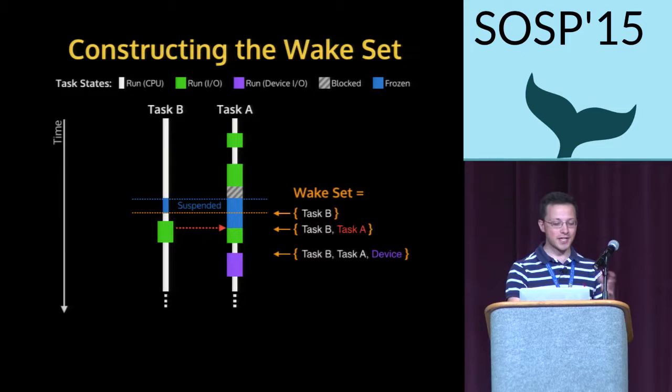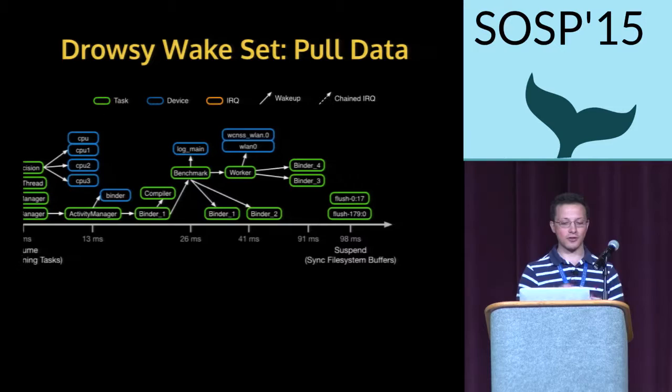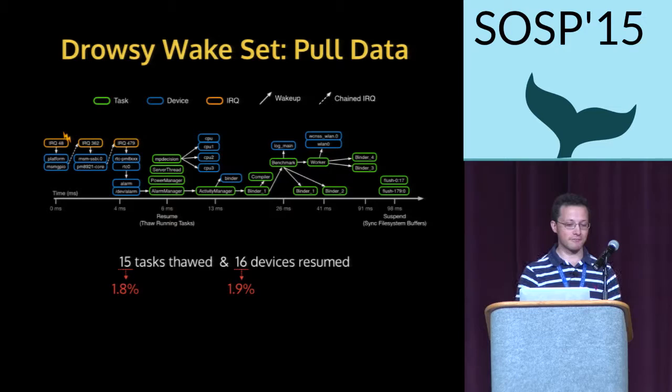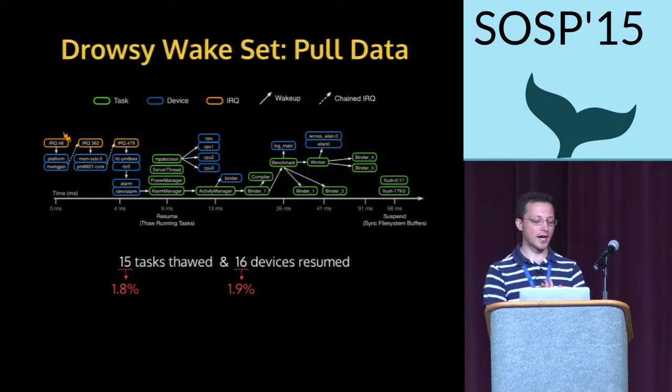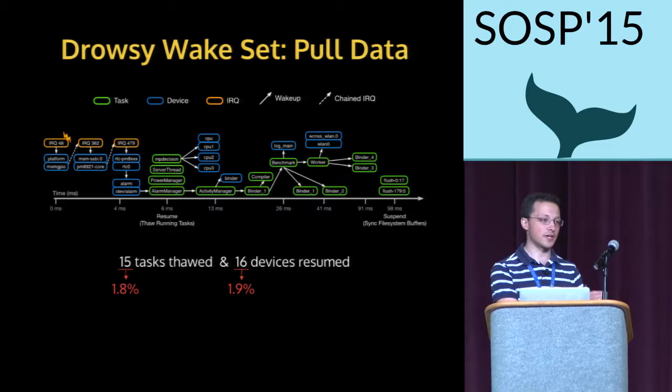This is somewhat simplified compared to the real system. For the pull data event, the full story is in the paper, but the key takeaway is that we're actually waking up just 15 tasks and 16 devices — less than 2% of the tasks and devices that would otherwise be resumed or thawed as part of a transition to the on state. This is the minimal set needed to handle the event.